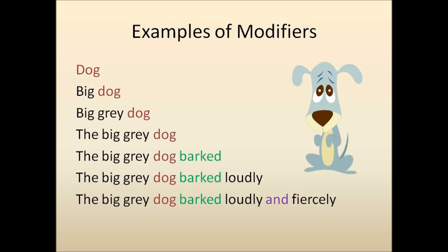So, for example, we can start with one noun, dog. We can add to that by calling it a big dog. We could add to it again by calling it a big gray dog. We could add to it one more time by adding the article, the big gray dog.